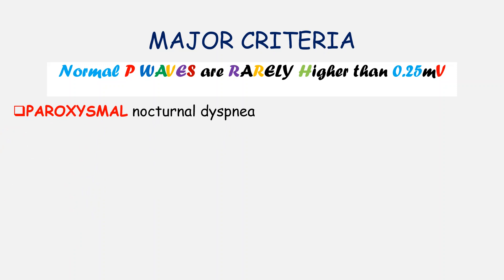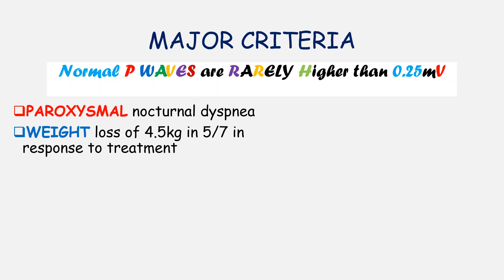P stands for paroxysmal nocturnal dyspnea, which basically means that the patient experiences episodes of breathlessness while they sleep at night. The letter W stands for weight loss of 4.5 kilograms in five days in response to treatment. In other words, if you institute treatment and the patient loses at least 4.5 kilograms in five days, it makes you more sure of the diagnosis.